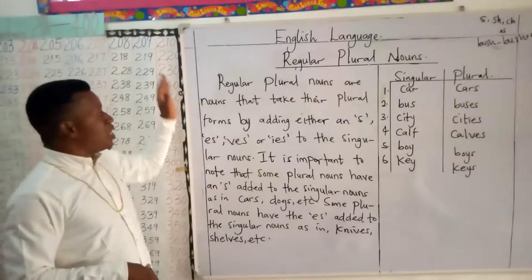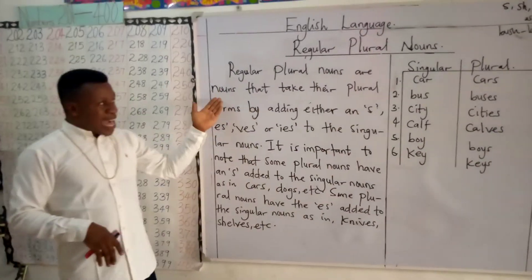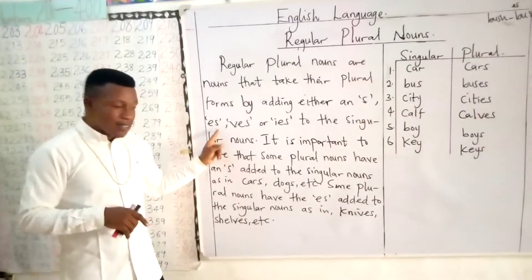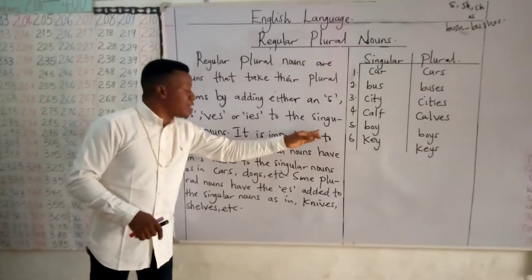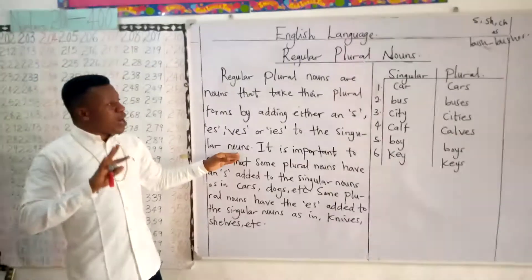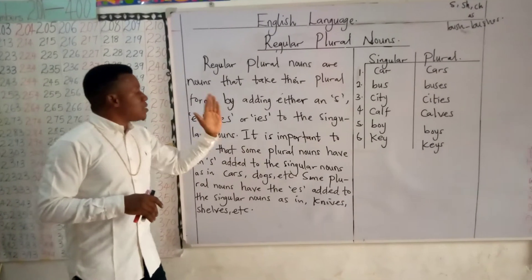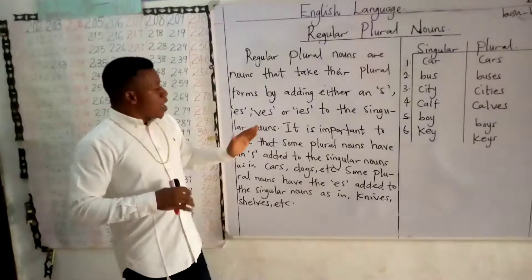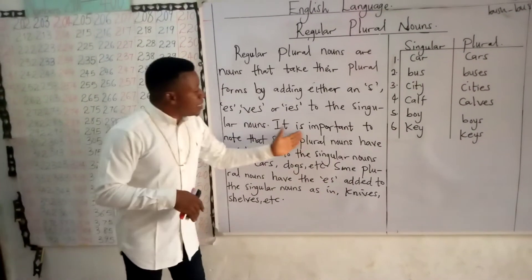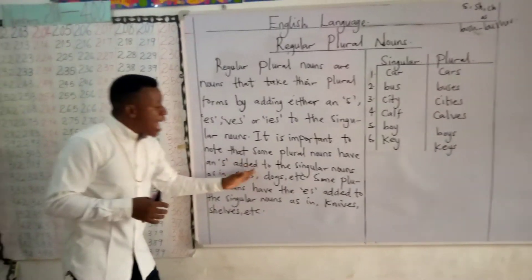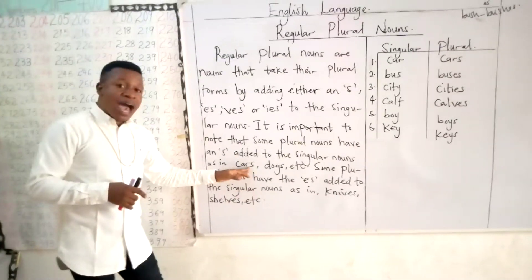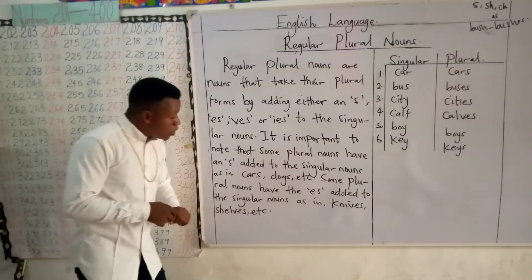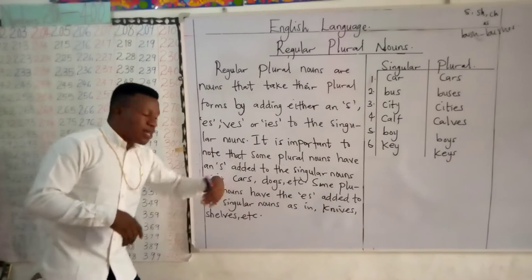Coming back to what I was discussing about regular plural nouns — regular plural nouns are nouns that take their plural forms by adding S, ES, VES, or IES to the singular noun. So whenever you add S, ES, VES, or IES to a singular noun, that noun is a regular plural noun. It is important to note that some plural nouns have S added, as in C-A-R-S, D-O-G-S, etc. Some plural nouns also have ES added, as in knives, shells, and many others.